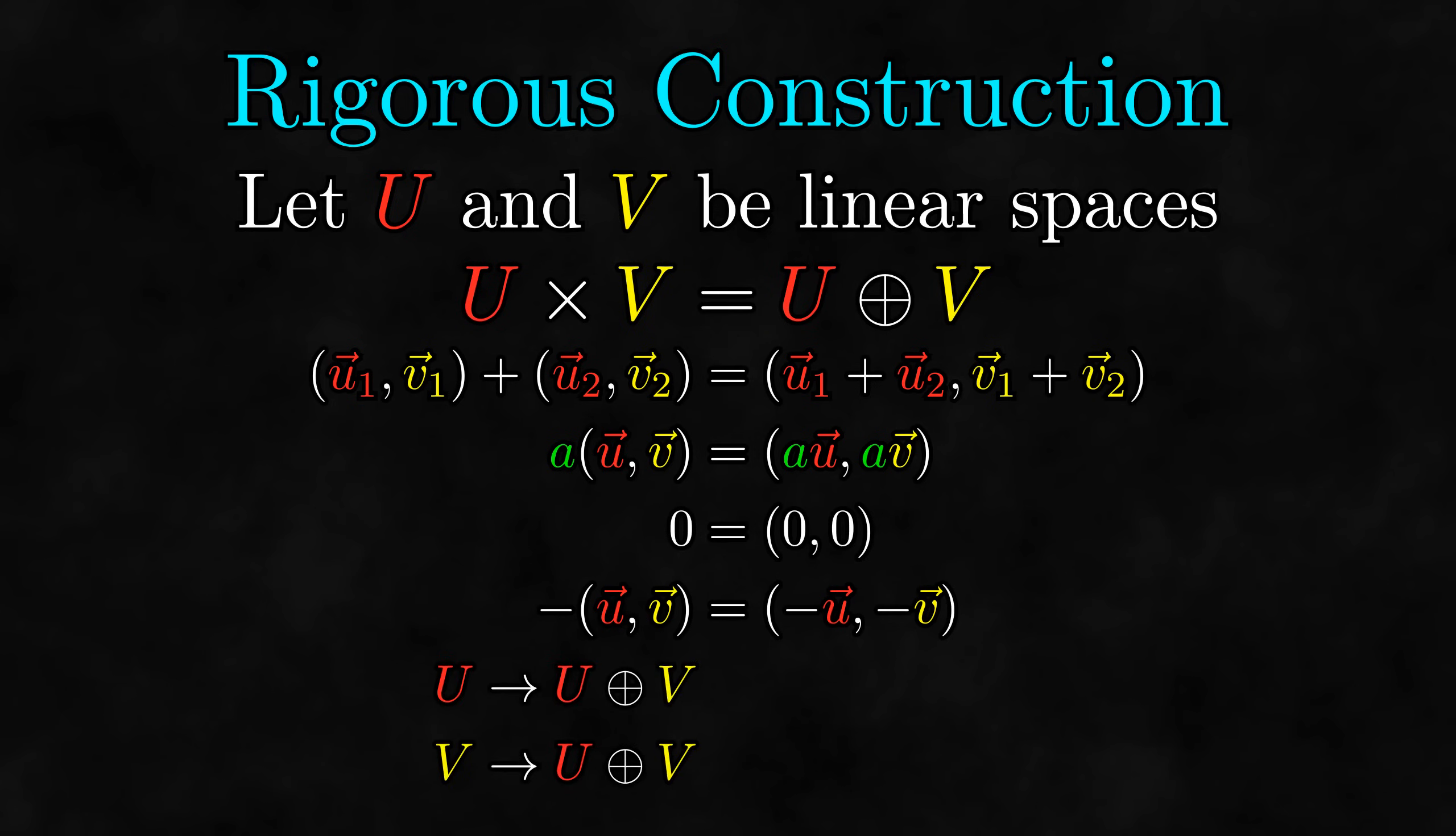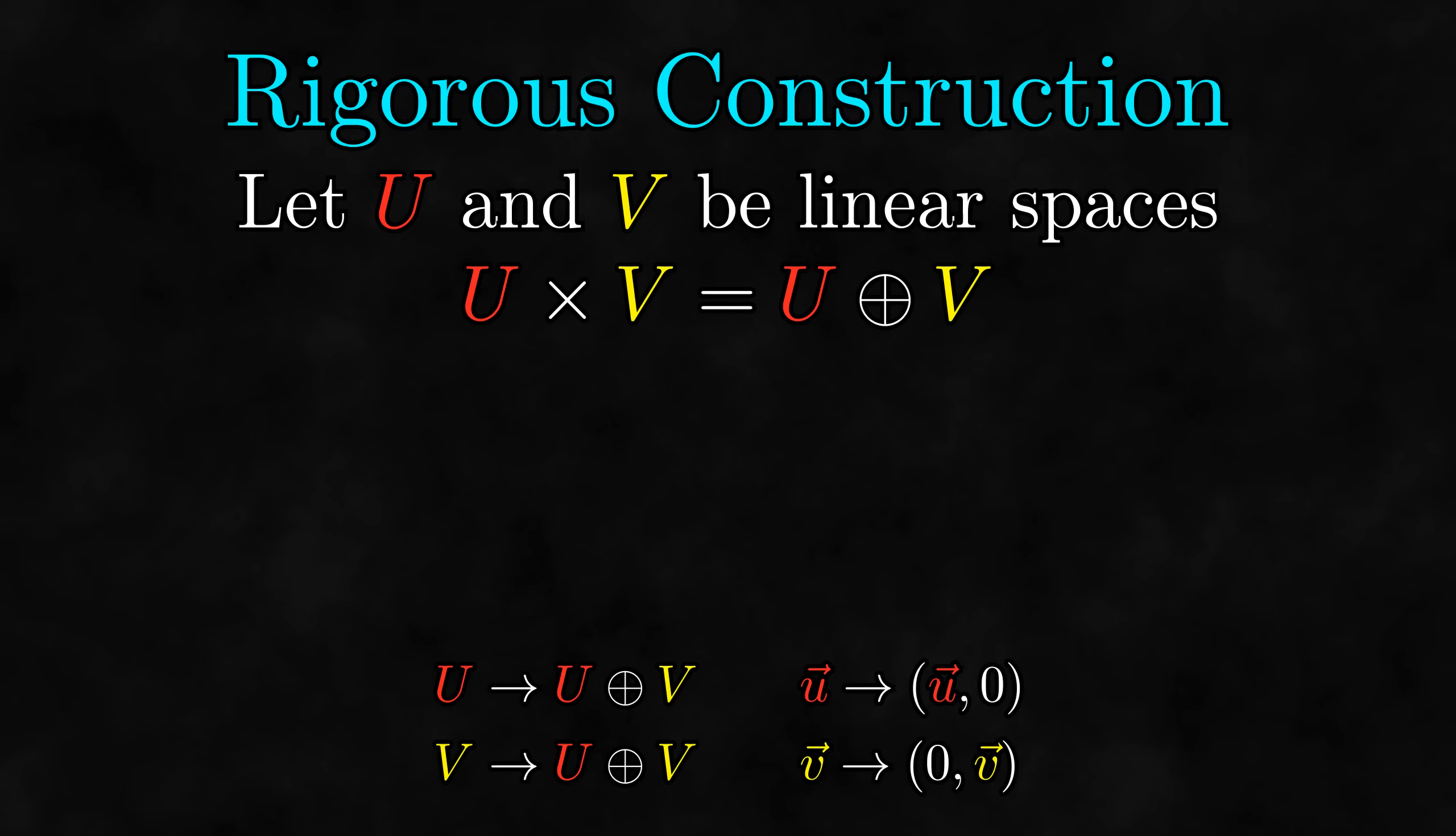We can create canonical injections from each linear space into the direct sum by taking a vector to the pair that contains that vector and zero. Now you might notice that under this construction, we don't technically have all of the zeros being equal to each other like I claimed earlier. However, this is a similar situation to how the natural number zero is not equal to the integer zero, which is not equal to the rational number zero, which is not equal to the real number zero. Technically speaking, these are not the same thing, but because each number system has a canonical injection into the next one, we act like they are equal and no one bats an eye. It's the same thing here. We have a canonical injection from each linear space into the direct sum, so we can treat all the zeros as being equal and everything will be fine.